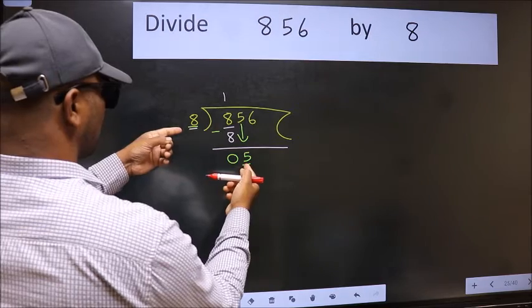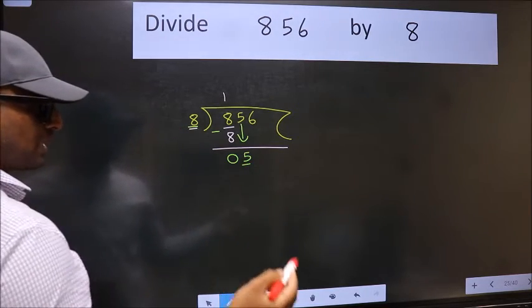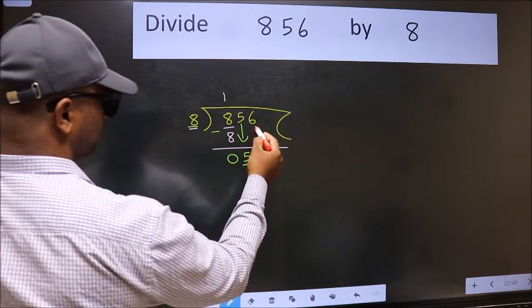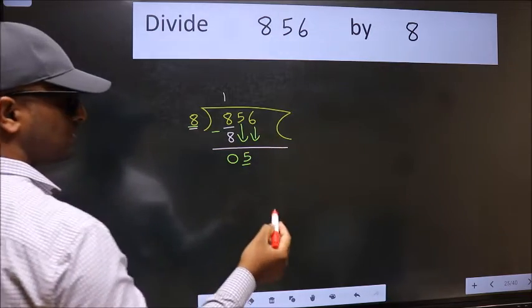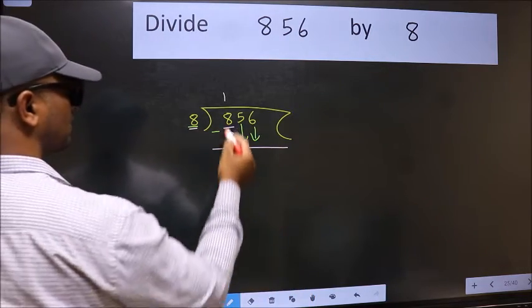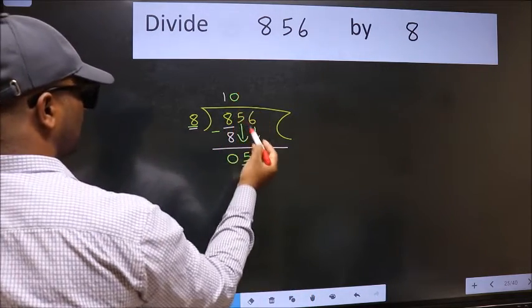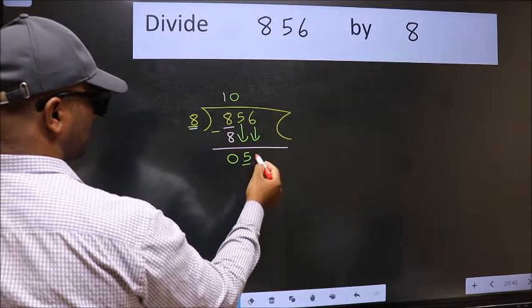5 is smaller than 8. So we should bring down the second number. And the rule to bring down second number is we should put 0 here. Then only we can bring this number down.